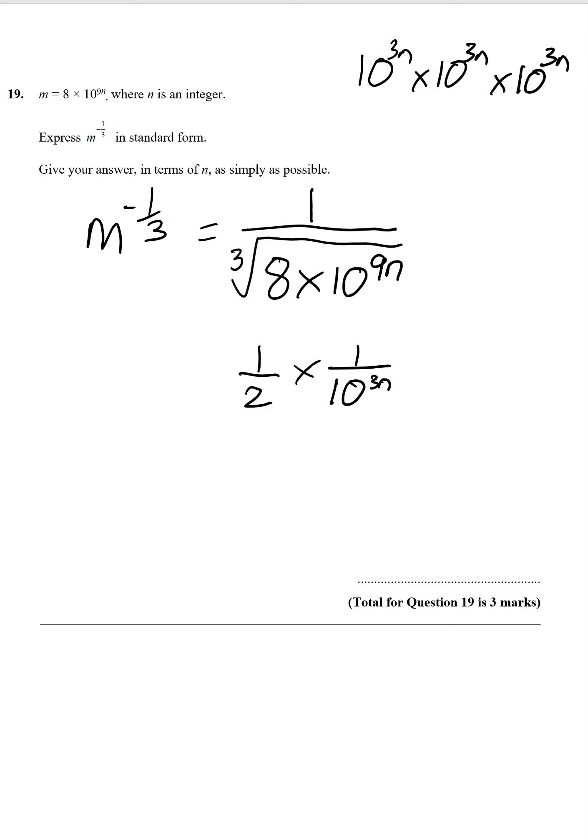Now we can put it all back up on there because they want it in standard form. Let's put it back up, so we're not 1 over. We've got 0.5 times 10 to the minus 3n. But we're still not in standard form because this is 0.5, we need it 5. So it's 5 times 10 to the minus 3n minus 1. That would get it back to 0.5, so we need that minus 1 there.